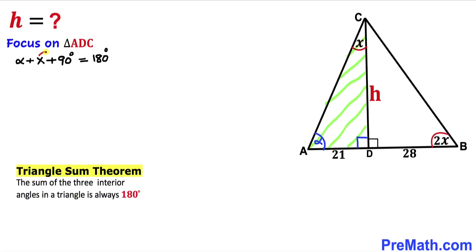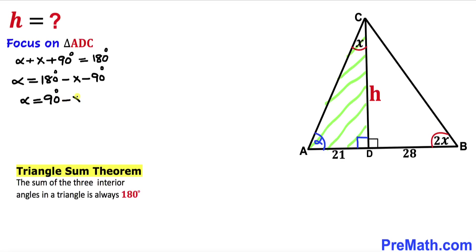Now let's move the other angles to the right hand side. So therefore our angle alpha is going to be 180 degrees minus x minus 90 degrees. Let's simplify the right hand side: angle alpha equals 90 degrees minus x. So I'm going to replace this angle alpha by 90 degrees minus x.